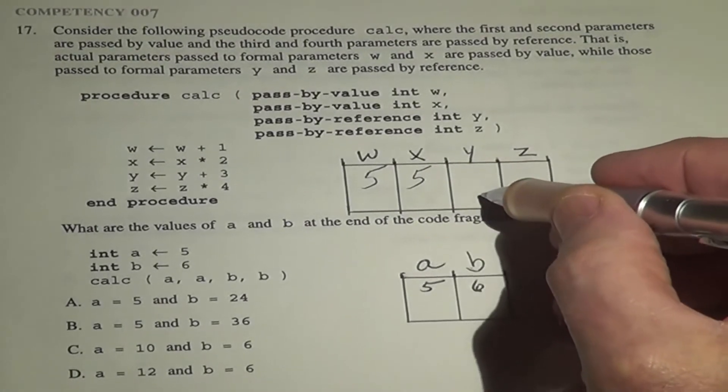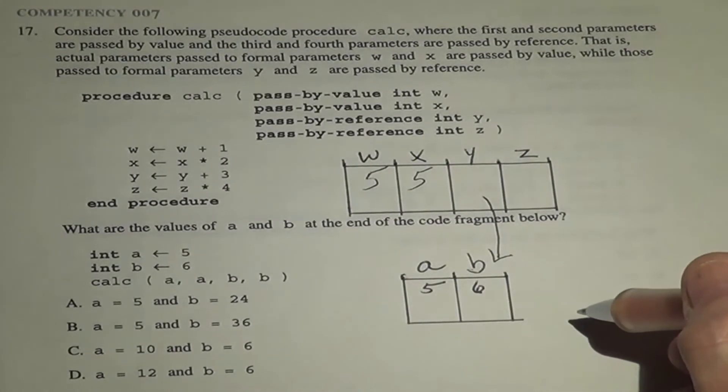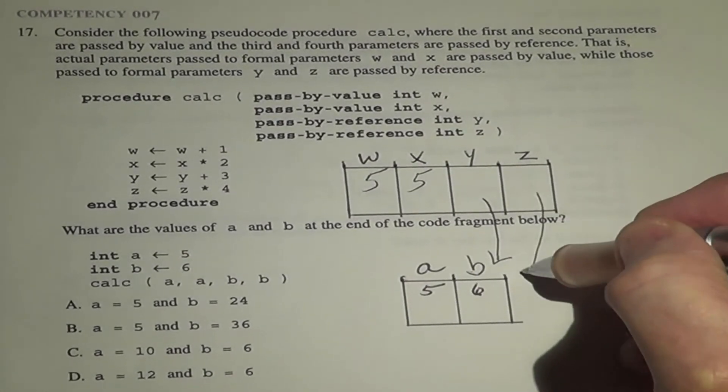Y doesn't get the 6, it gets where the 6 is located. So it points to where B is pointing to. Same thing with Z.